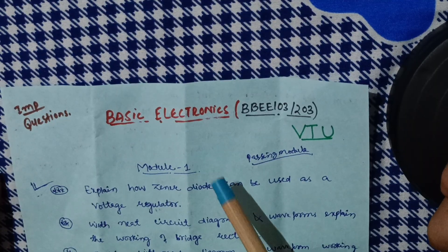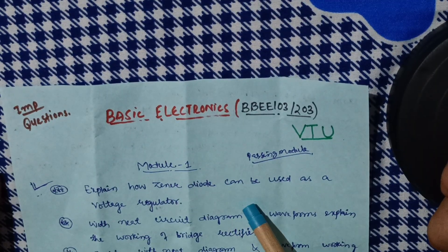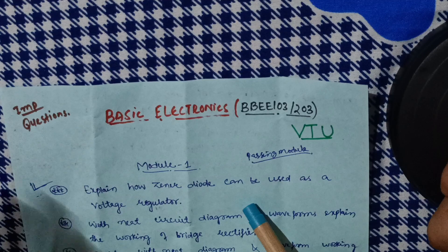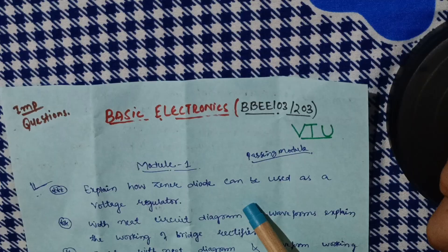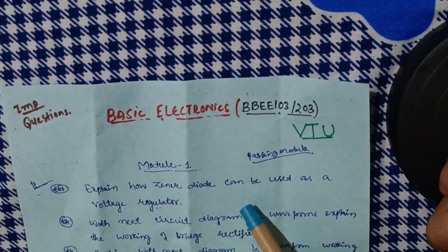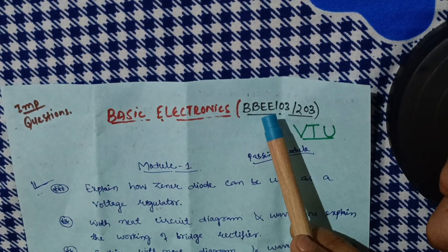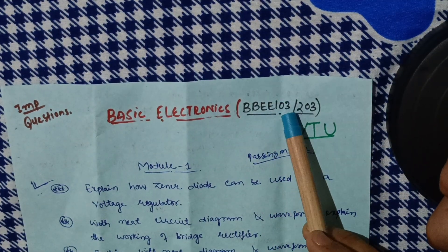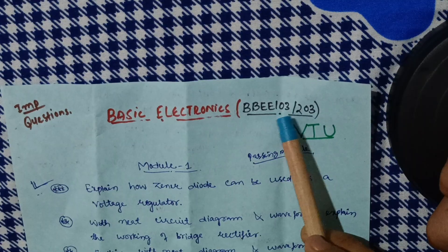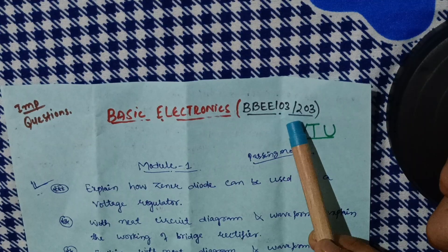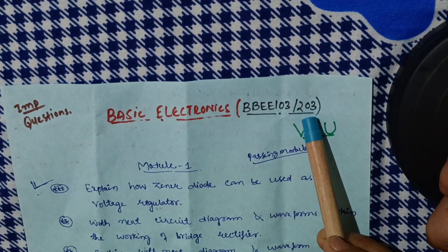I believe that if you just cover this much portion, which I will mention in this video, it will be enough to conquer this subject. The subject code is double B double E one zero three and two zero three — in the first semester it is the third subject and in the second semester also the third subject.